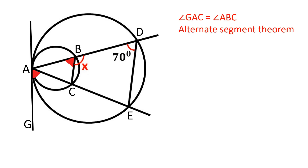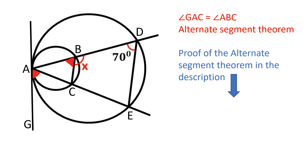By the alternate segment theorem, angles GAC and ABC are congruent, because the angle between a tangent and a chord is equal to the angle subtended by the same chord in the alternate segment. If you are not familiar with this theorem, please check my video on this topic in the description below.